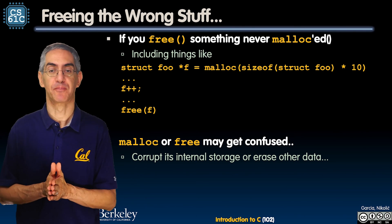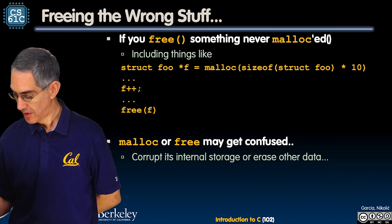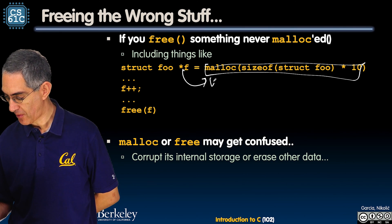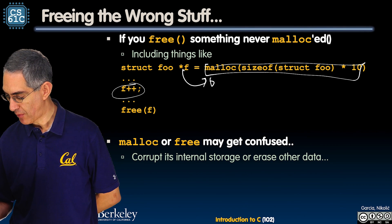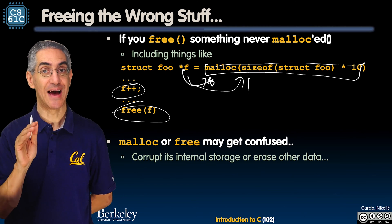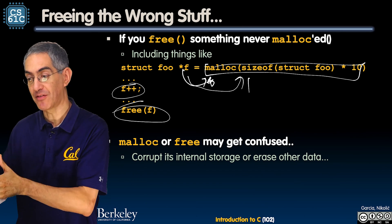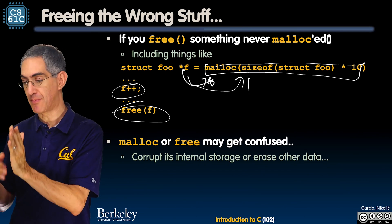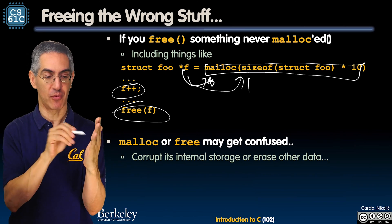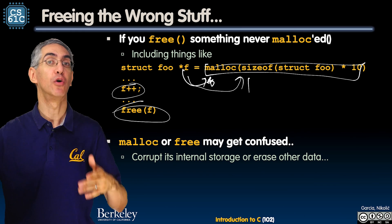Don't free the wrong stuff. Here's a malloc for the 10 structures. And now I'm going to say F++. Here's my malloc guy. F points right to the front of it, the zeroth element. Now F++. F now points to the first element. And now I free it. Bad. Free has a list. What does free take? An address. So free has an address that malloc and in the process of doing malloc internally in their bookkeeping, they keep track of all the mallocs. Free gets one and it doesn't match.